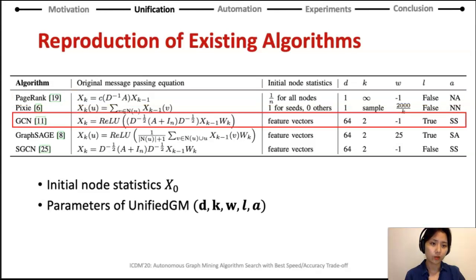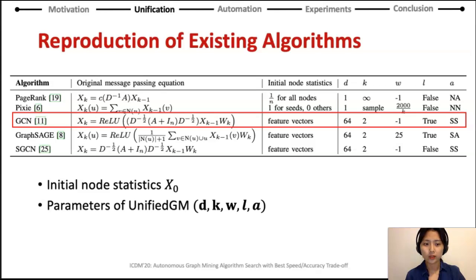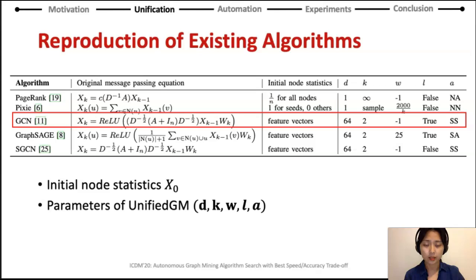Let's see another example for Graph Convolutional Networks. We assign given node feature vectors as initial node statistics. The dimension is set to 64, since the hidden dimension in GCN is commonly 64. The step is set to 2, denoting a two-layer GCN model. Width W is minus 1, since GCN nodes communicate with all neighbors. Nonlinearity is true. The aggregation is set with self-loop and symmetric normalization. This shows that the original message passing equations of existing graph algorithms can be fully reproduced under the Unified GM framework with the proper initial node statistics and parameter sets.